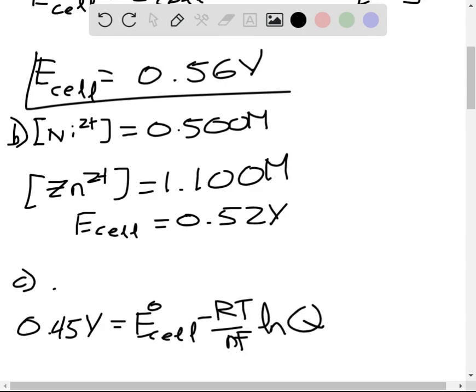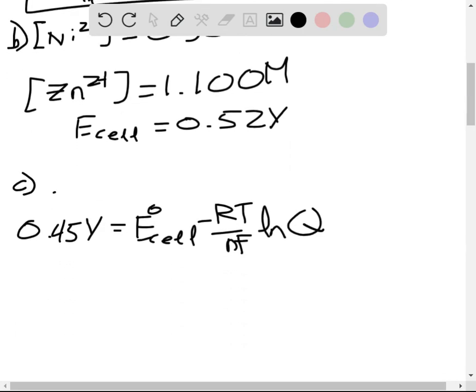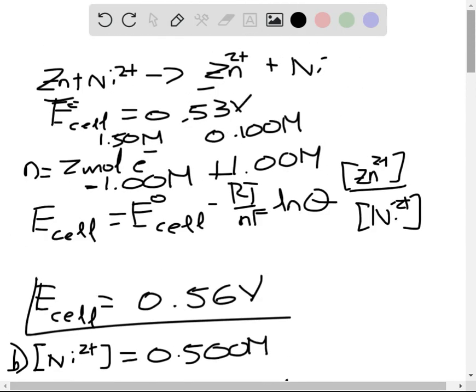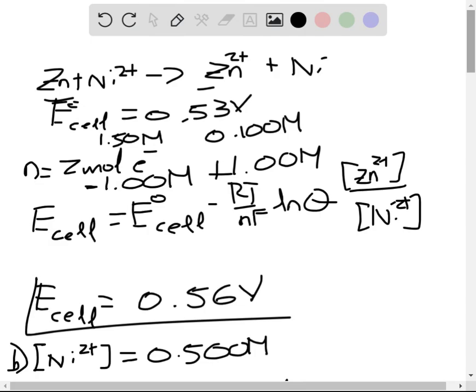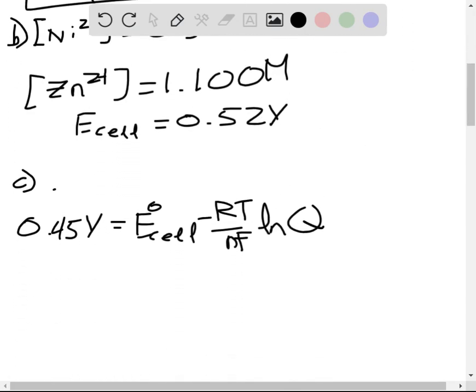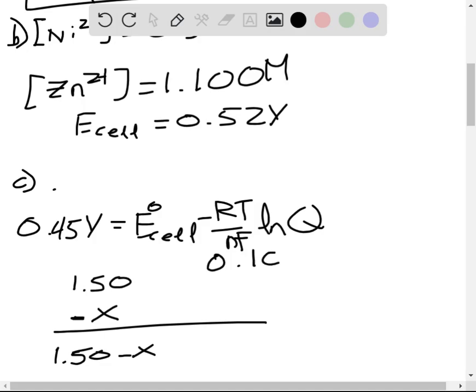As the reaction progresses, essentially the concentration of nickel will decrease, while the concentration of zinc will increase. So nickel initially has a concentration of 1.50. Its final concentration can be described by minus X. So the final concentration would be 1.50 minus X. While that for zinc is going to increase, so this would be plus X.